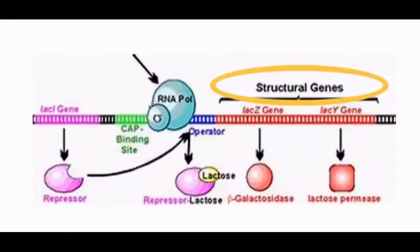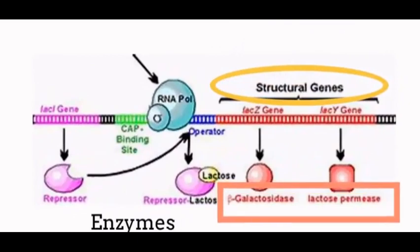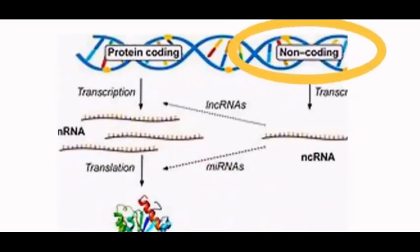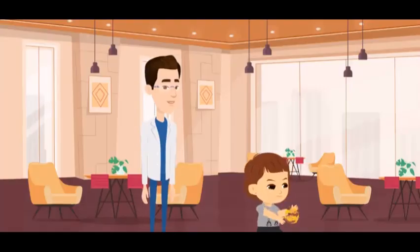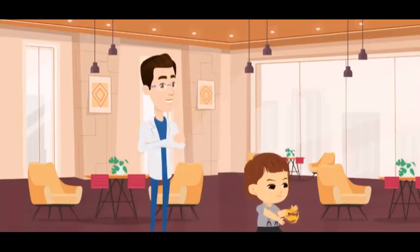Structural genes are the ones that code for proteins and RNAs, like enzymes and structural proteins. They also include non-coding RNAs, like transfer RNAs and ribosomal RNAs. By non-coding RNA, you mean a functional RNA molecule that is not translated into a protein. Yes, dad, you're absolutely right.